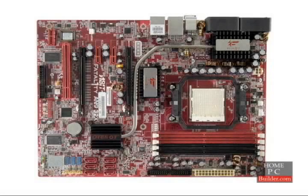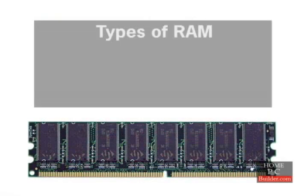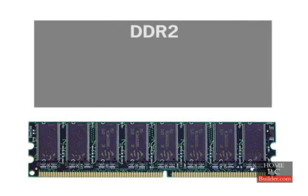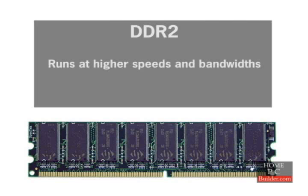For more on motherboards, see the motherboard component lesson or the installation lessons. There are currently two types of RAM used in computers today. The older type, found in most computers made in the last four years, is called DDR. The newer type, which has been around for two years and is just now going mainstream, is called DDR2. DDR2 is able to run at higher speeds and therefore higher bandwidths.